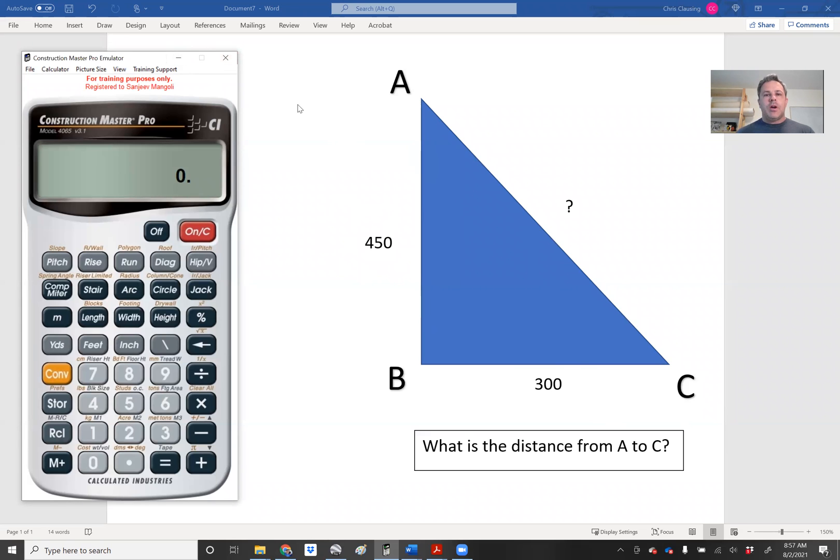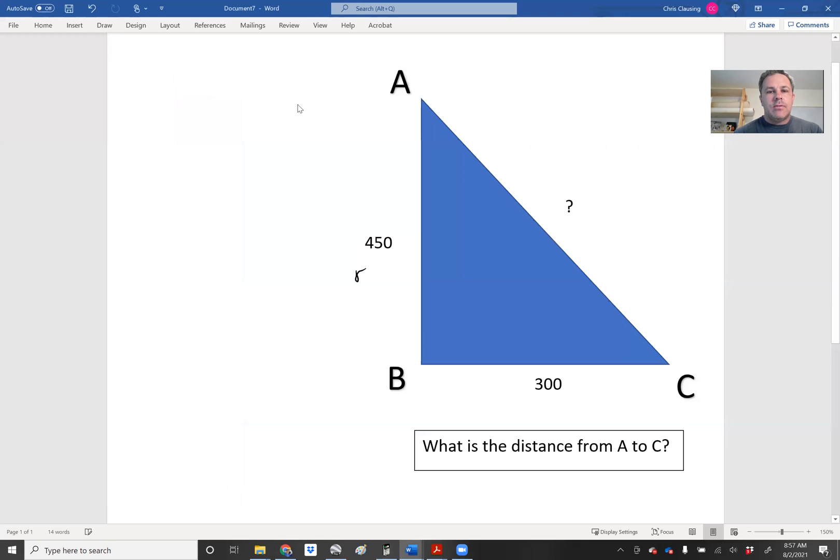So basically on this problem, the 450 or the A to B section, this is the same thing as saying rise. And the B to C, the 300 distance here, that's the same thing as saying run. And then this A to C is the same thing as diagonal on our calculator, D-I-A-G.